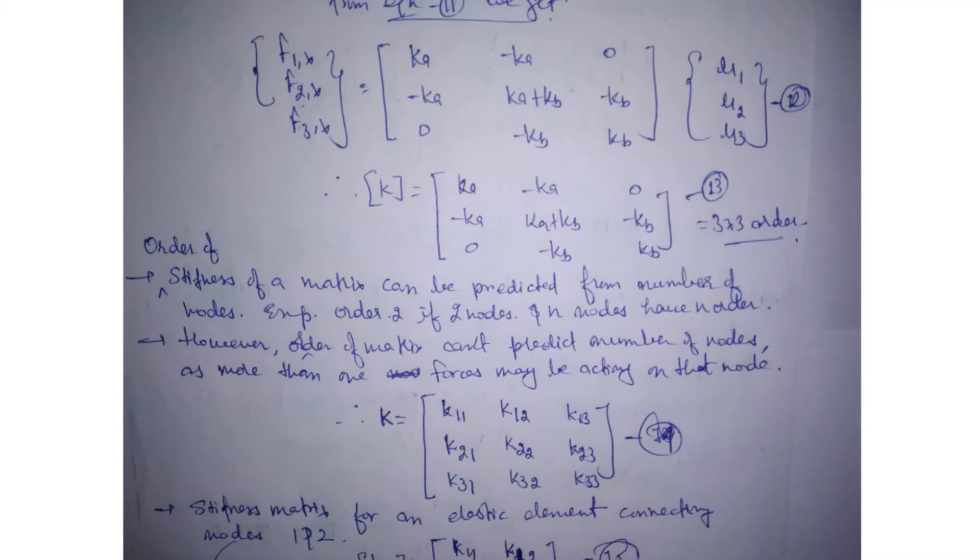The order of stiffness matrix can be predicted from the number of nodes. If some spring has 2 nodes, then the order of matrix is 2. If it is n, then it is n.